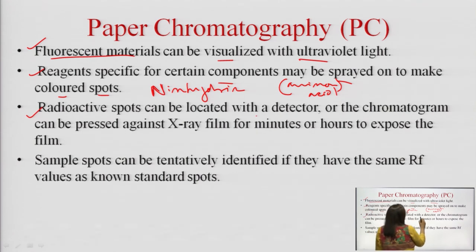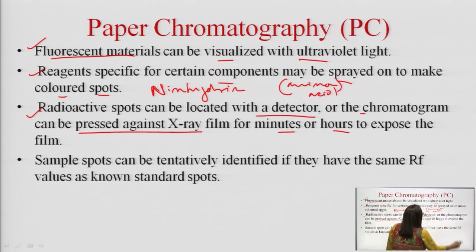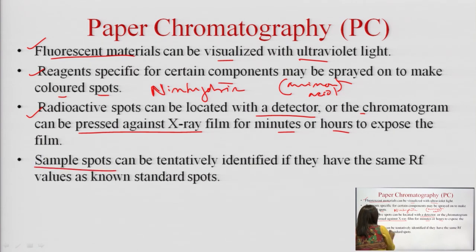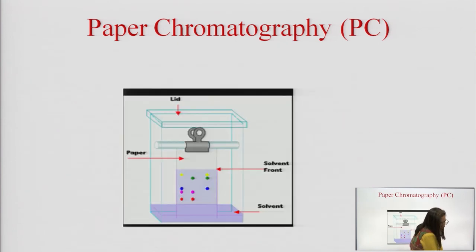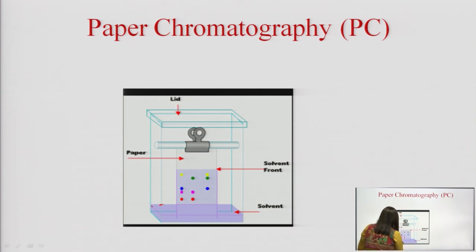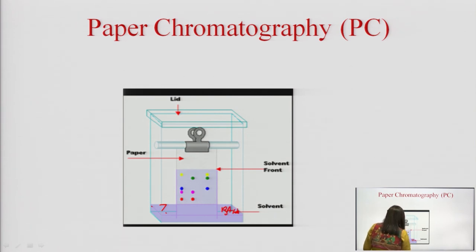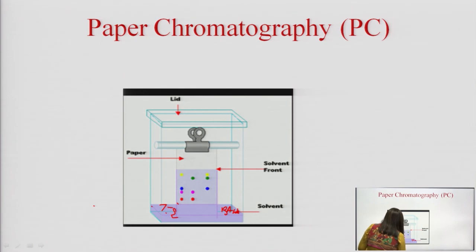Radioactive spots can be located with a detector, or the chromatogram can be pressed against X-ray film for minutes or hours to expose the film. Sample spots can be tentatively identified if they have the same Rf values as the standard spots. In the diagram for paper chromatography, the developmental tank contains the BAW solvent; the paper is hung from the top, with the spot applied 2 centimeters from the end, ensuring the spot does not touch the solvent bed.